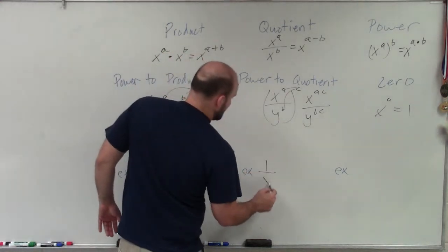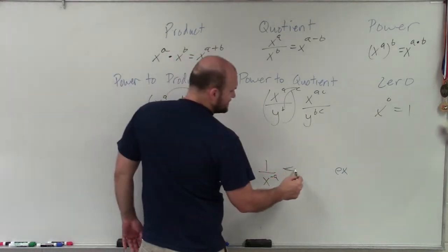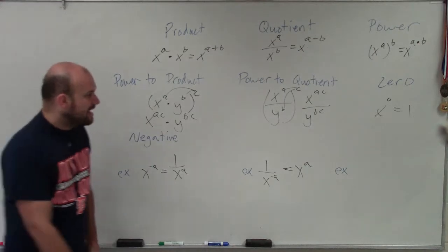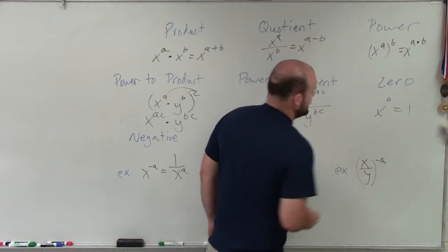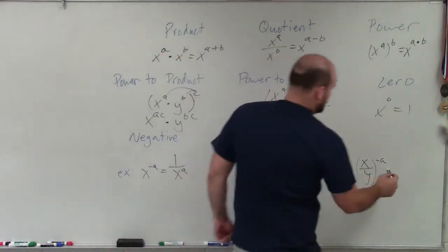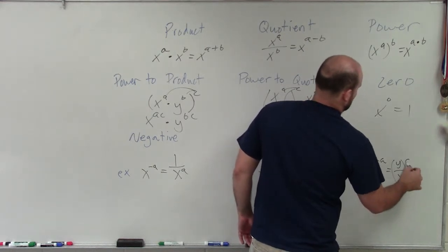If I have 1 over x to the negative a, then again, I can rewrite this as a positive exponent by taking the reciprocal. So that would just be x to the a. And also, if I have x over y raised to the negative a and I want to rewrite this, again, rewrite it with the reciprocal, which would equal y over x raised to the a.